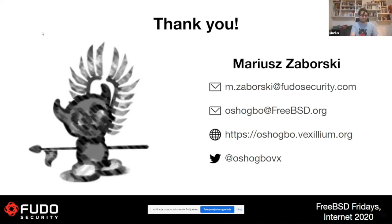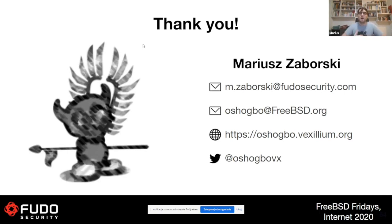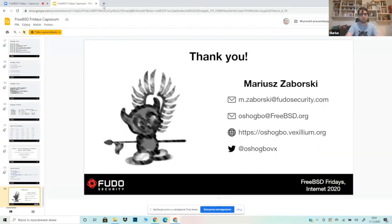We do have a couple of questions. The first: what do you think is the best path forward for oblivious capsicumization? We have many interfaces that require file system and namespace accesses, logging, etc. Modifying these interfaces to take capabilities as input is a lot of work and will never be finished. Like I mentioned, we are working with colleagues from Memorial University, Warsaw on automatically replacing syscalls that are not allowed in capability mode. Some things can be pre-opened — TZ data can be read before entering capability mode — and some things can be delegated. Sometimes we also need to change libc to behave differently.